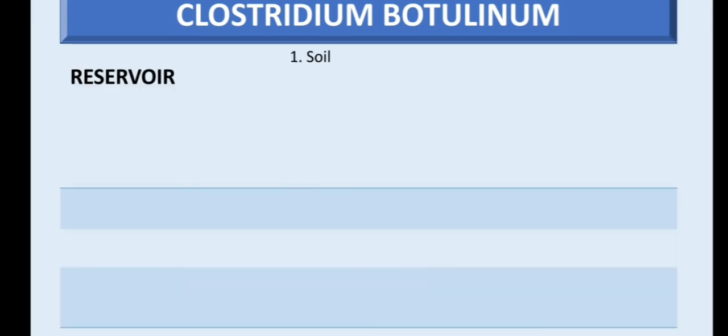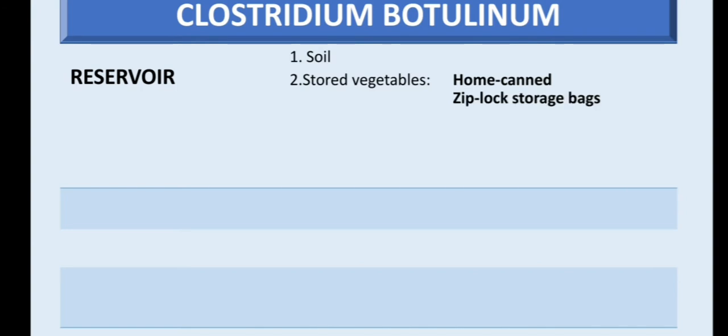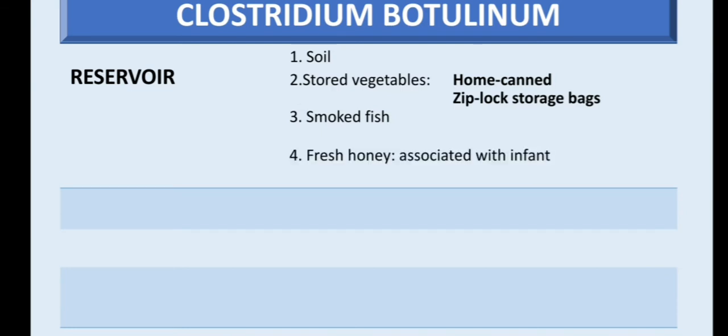The reservoirs of Clostridium botulinum include soil, stored vegetables — particularly home-canned foods — and also Ziploc storage bags. Other reservoirs include smoked fish and fresh honey. Fresh honey is mainly associated with infants. In adults, they have a balanced microflora, so if they eat these spores,